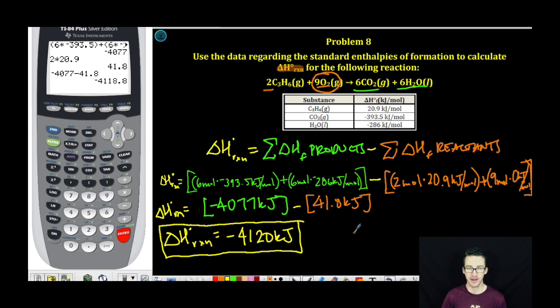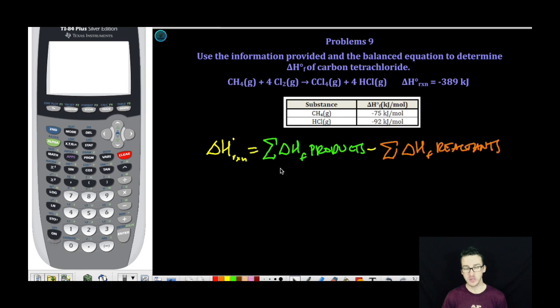Exothermic. We are done. Problem number nine, very similar. Use this formula again, except notice that this time we're actually given what the enthalpy change for the reaction is. So as you read this problem carefully, we are in fact asked to determine this time the heat of formation of carbon tetrachloride. This thing right here. So same formula, just solving for something a little bit differently. First thing I'm going to do is I'm going to plug in the enthalpy change for the reaction, which is negative 389 kilojoules.